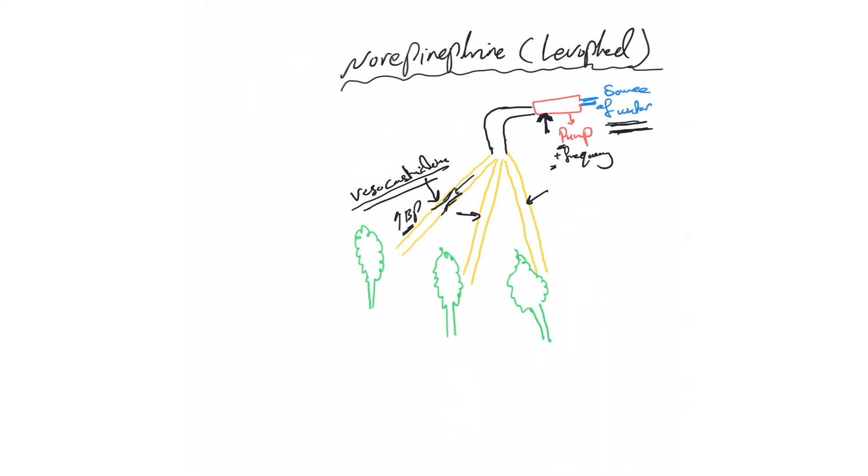That's the first thing about how levofed works. Because of this blood pressure increase and the constriction, narrowing of the vessels here, we mentioned that it will increase the frequency. But in the body because of this constriction, that will send a message to the pump telling it to decrease the frequency. All of this you should know in physiology. The vasoconstriction will send a message telling the pump to decrease frequency and the levofed direct effect tells the pump to increase frequency.